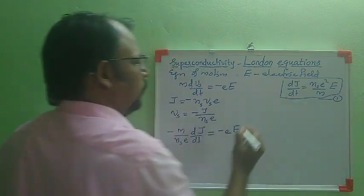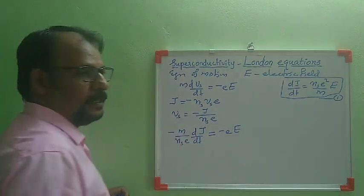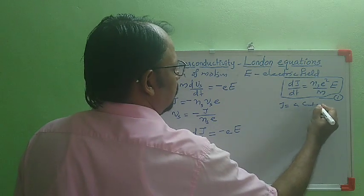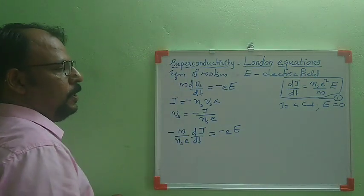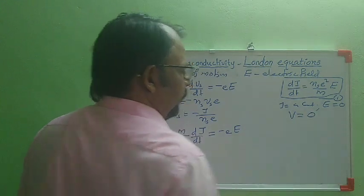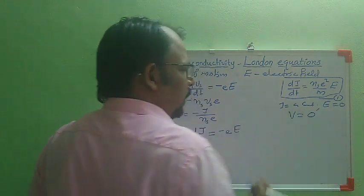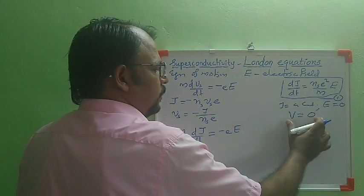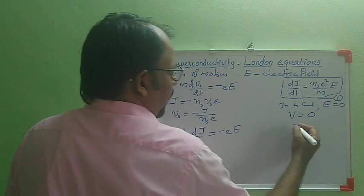So dJ/dt = (Nse²/M)·E. If we take steady-state current, and J is independent of time, then dJ/dt = 0, which gives electric field E = 0. If E = 0, then potential difference V = 0. That means in a superconductor, we can have a constant current density J without any potential drop across the material.